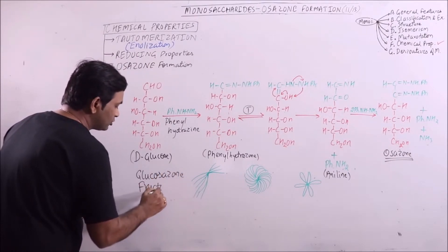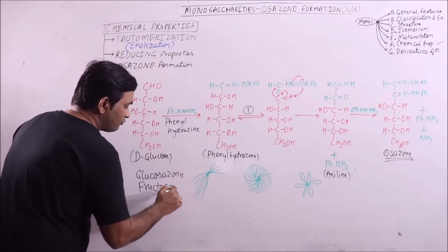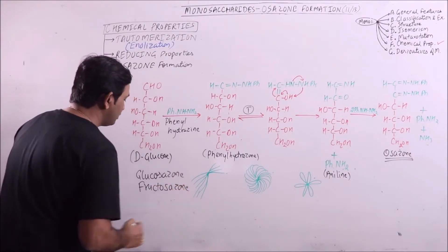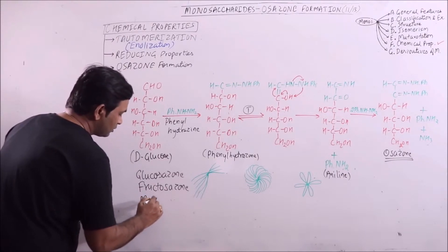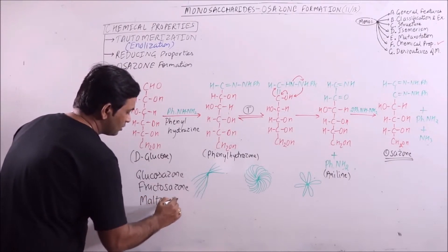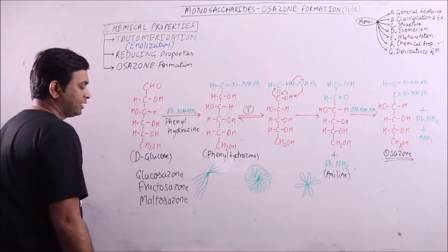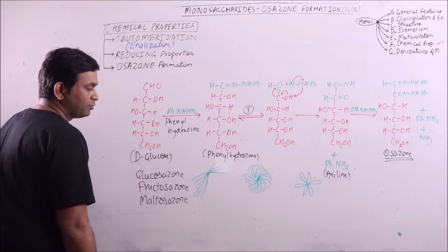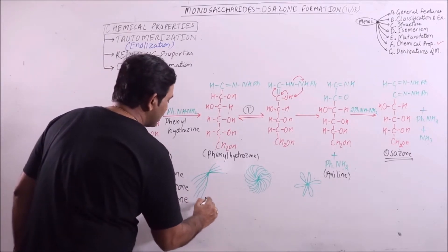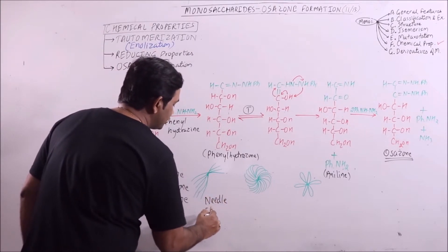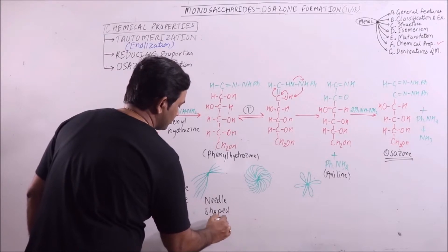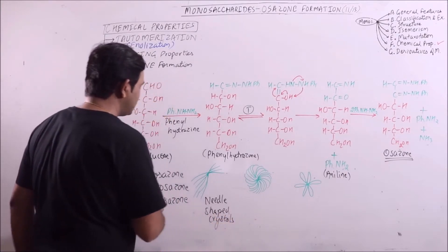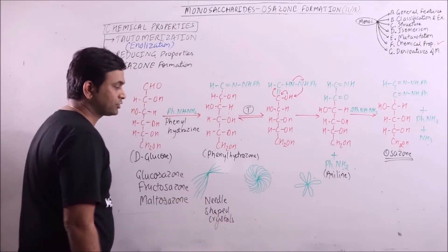If the sugar is fructose then fructosazone will be obtained. If maltose is present then maltosazone will be obtained. These all are needle-shaped crystals. Osazones of these sugars will form needle-shaped crystals.